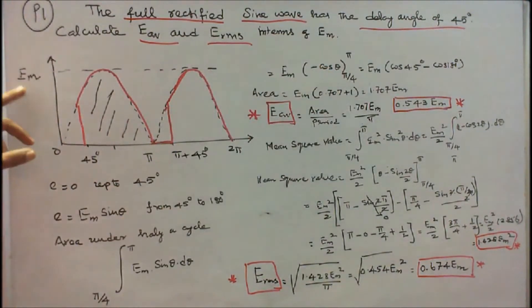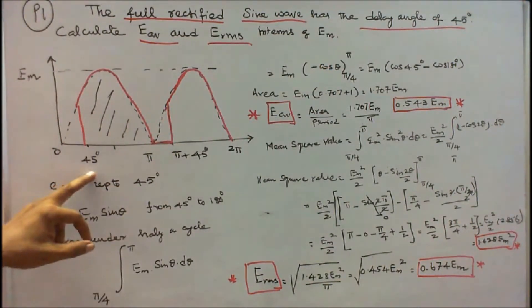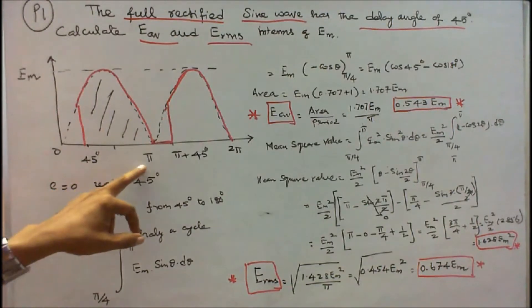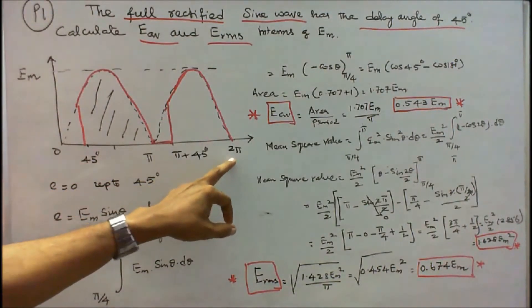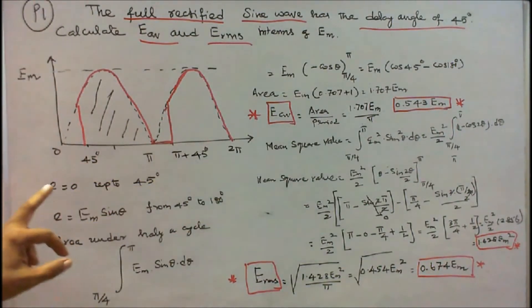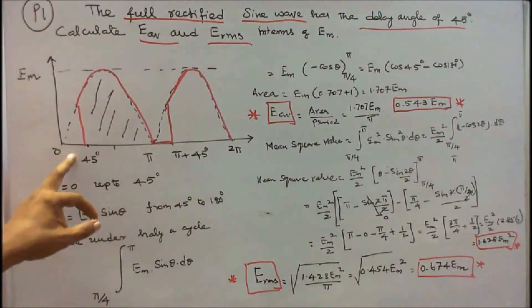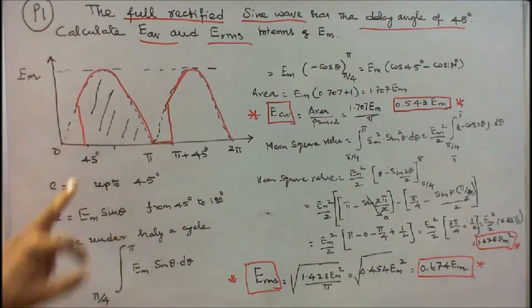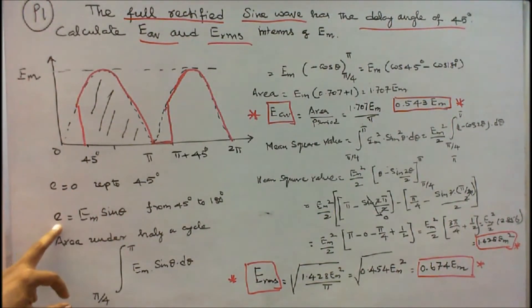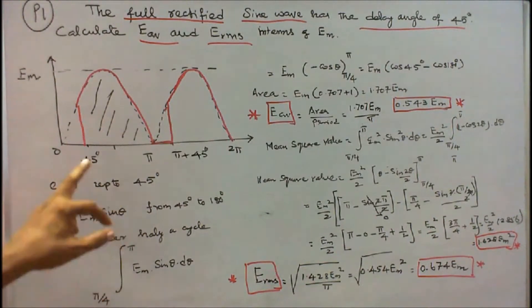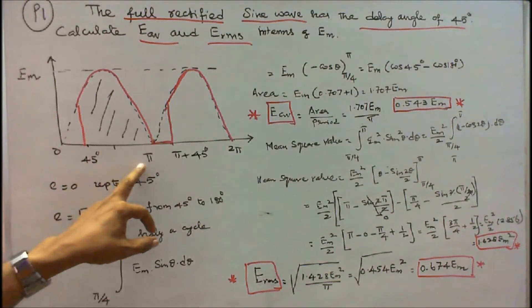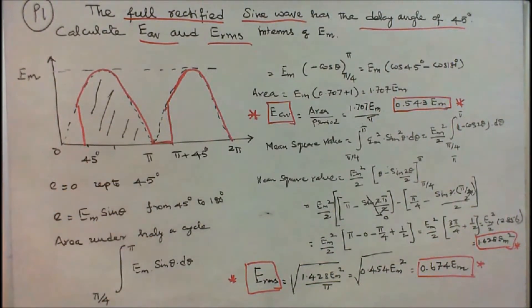This is the waveform. The maximum voltage is EM. Key reference points are: 0, 45 degrees, pi, pi plus 45, and 2pi. The instantaneous voltage E is equal to 0 up to 45 degrees, and E equals EM times sine theta from 45 degrees to 180 degrees. We find the area under half a cycle.